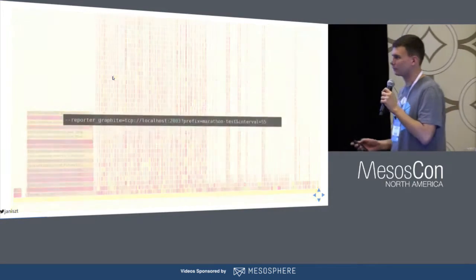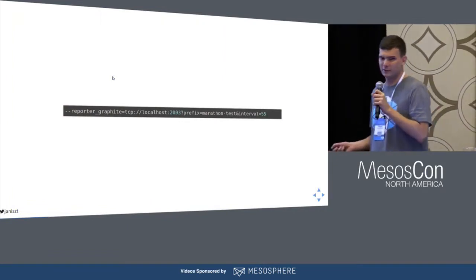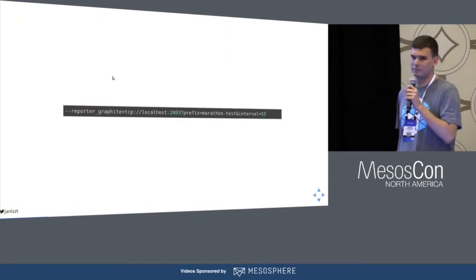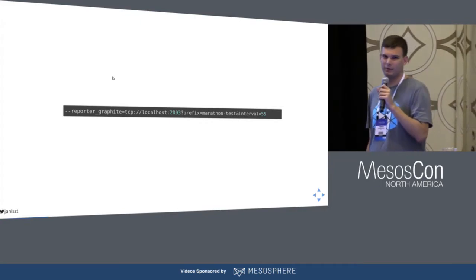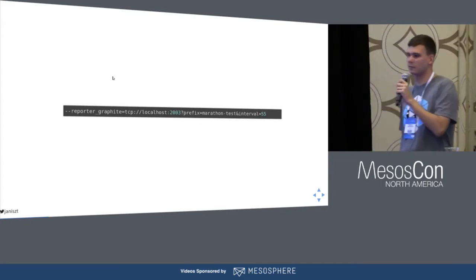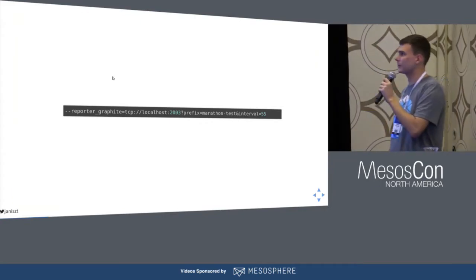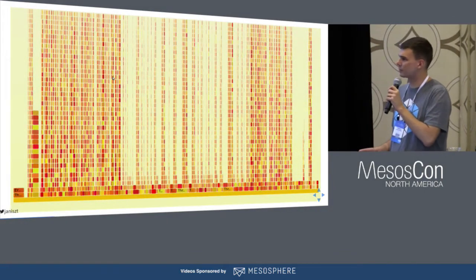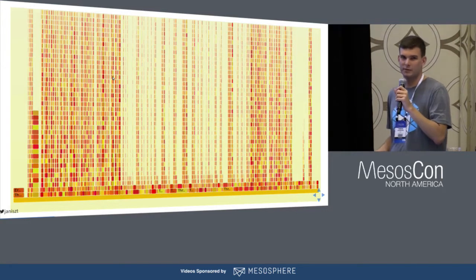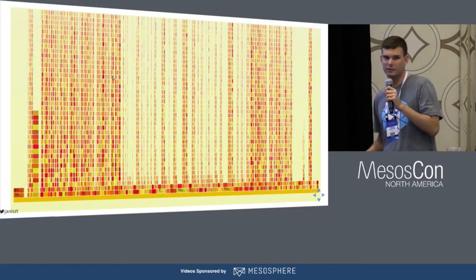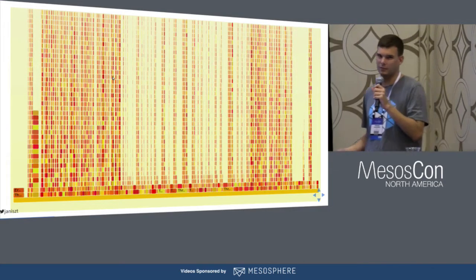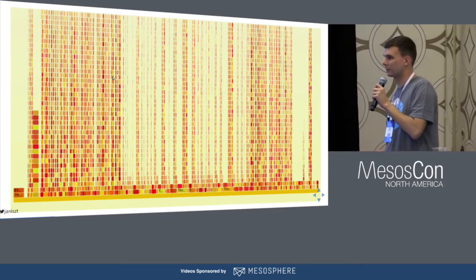So if you want to use metrics, make a sensible interval. Switching from the default 10 seconds to 55 seconds reduced metrics CPU time to less than 3%. And that was the first huge gain in performance in the case of Marathon.